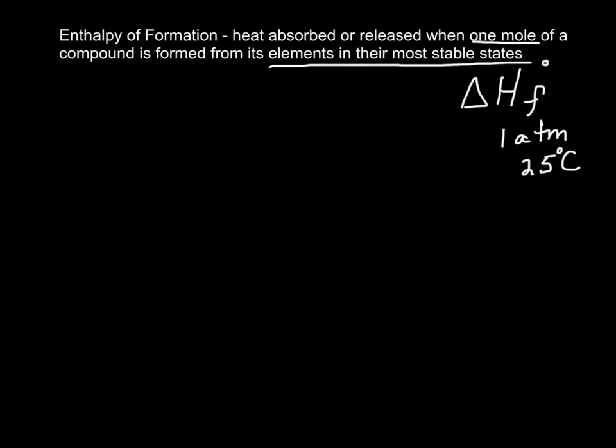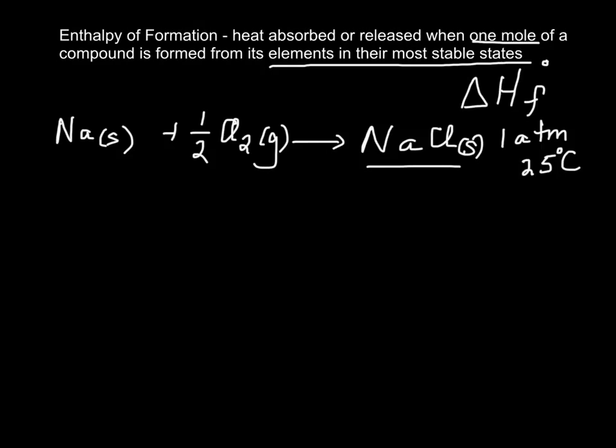For instance, what if I wanted to make sodium chloride? I would make it from its elements in their most stable state. Sodium's most stable at room temperature - it's a solid - plus chlorine is a diatomic molecule and a gas. And I'm going to put the half there instead of going 2, 1, 2, because it's one mole of the product. So a heat of formation for sodium chloride would be the heat that's released or absorbed when this reaction takes place.